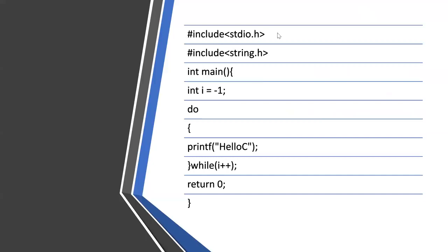Now this question is a C program where int i equals minus 1 and a do-while loop is used. The do-while checks the condition after executing the body at least once, so 'hello c' is printed one time first. Now the condition is while(i++). Since it is post-increment, the original value of i — which is -1 — is used in the condition. Since any non-zero number is true, while(-1) is true, so the loop repeats.